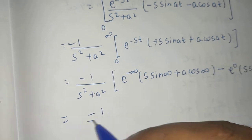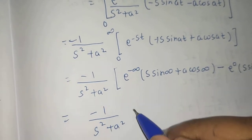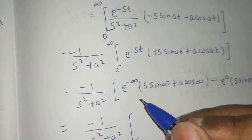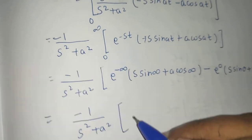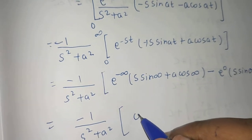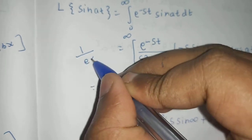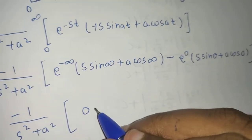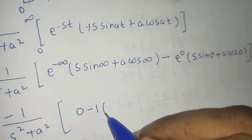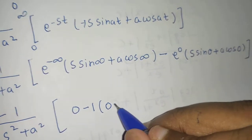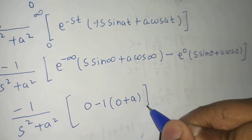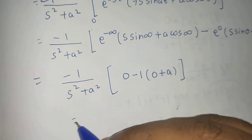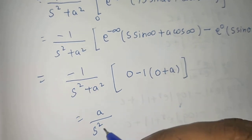Now just some more simplification. E to the power minus infinity is 1 upon e to the power infinity, and 1 over a very big quantity gives 0, so that entire term becomes 0. Now e to the power 0 is 1, sine 0 is 0 so the first term becomes 0, and cos 0 is 1 so the second term gives plus a. So from here we are getting minus a, and minus a multiplied by minus 1 gives a, divided by s squared plus a squared.